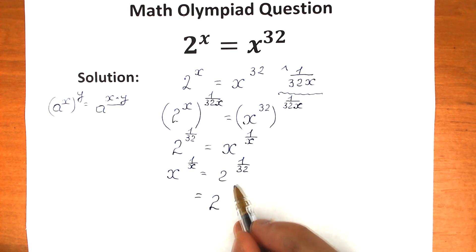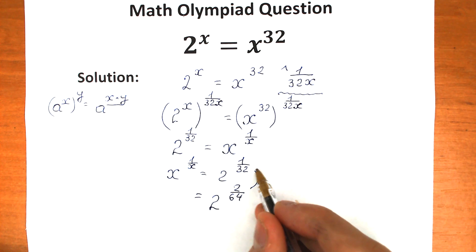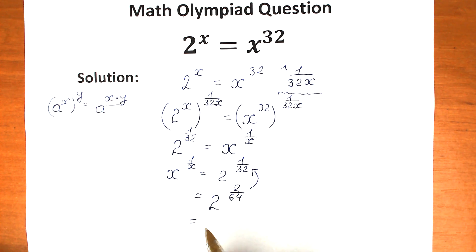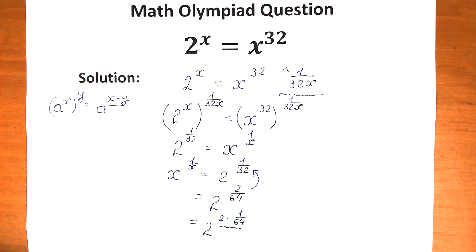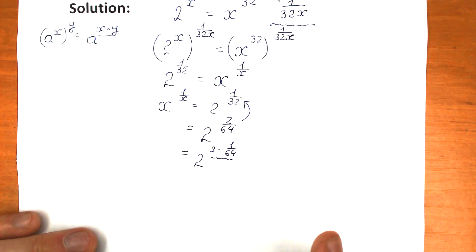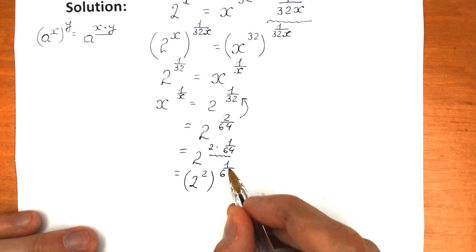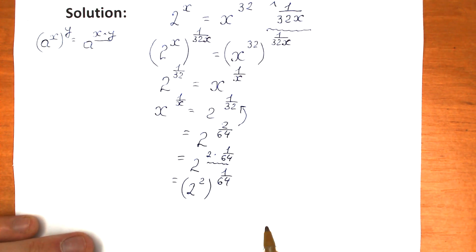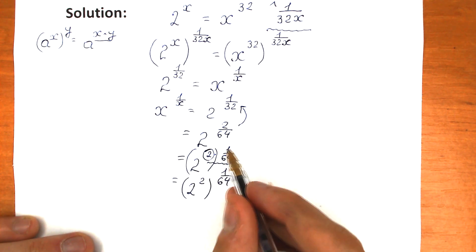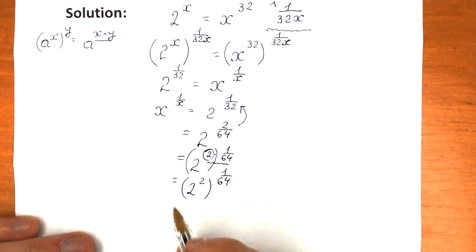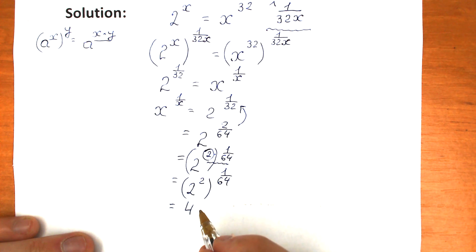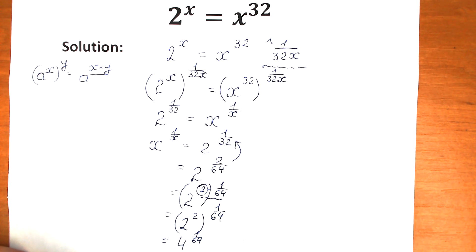So we have 2 raised to the power 2 over 64. We can separate the exponent: 2 times 1 over 64. This means we can take 2 squared — which equals 4 — and raise it to the power 1 over 64. So the right side becomes 4 to the power 1 over 64.